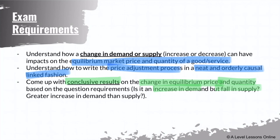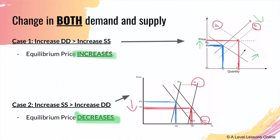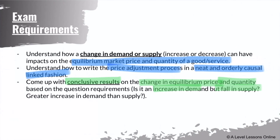There are also cases where equilibrium quantity could be uncertain - for example, if demand increases but supply falls, quantity could go either way. To determine the extent, plot out the different cases as well. I recommend always drawing the two cases: either price is uncertain or quantity is uncertain. After drawing them out, come to conclusive results on your price and quantity, and the rest should be straightforward.